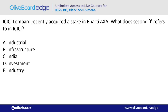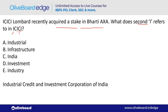ICICI Lombard recently acquired a stake in Bharti AXA. What does the second 'I' refer to in ICICI? The second I stands for Investment — option D. Both ICICI Lombard and Bharti AXA are headquartered in Mumbai. ICICI's full form is also very important.